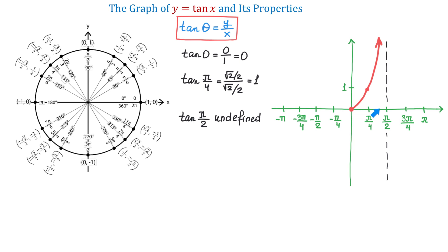As we get closer to pi over 2, the function goes to positive infinity. We can even do a quick check by evaluating the tangent at a number very close to pi over 2. Because pi over 2 is the same as 90 degrees, we can evaluate the tangent at, let's say, 89.9 degrees. And if we use a calculator, we will see that the value of tangent will be approximately 573.